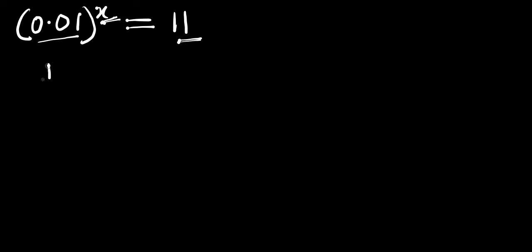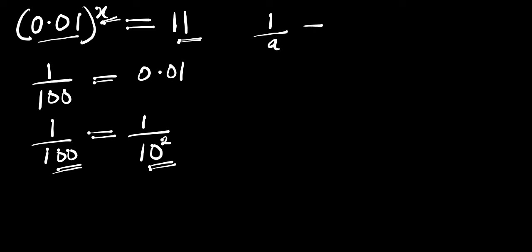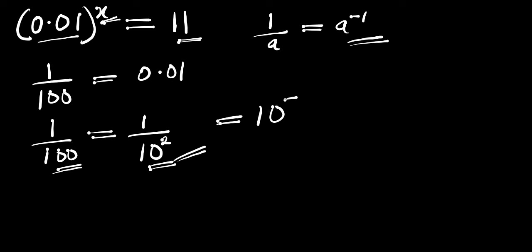Now if you have 1 divided by 100, this equals 0.01. And you can rewrite 1 divided by 100 as 1 divided by 10 to the power of 2. Of course, 10 to the power of 2 is 100. Now remember, if you have 1 divided by a, this equals a to the power of negative 1. So applying this identity, that means we are going to have 10 to the power of negative 2.